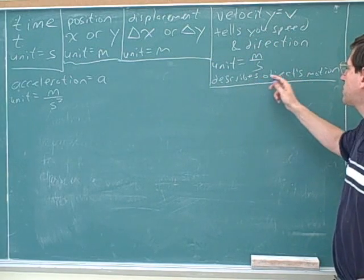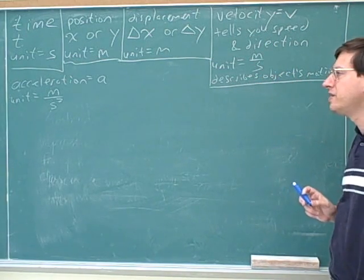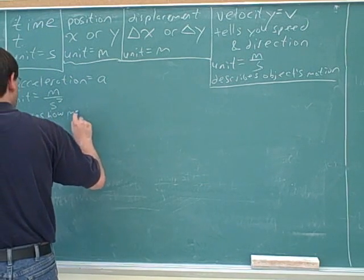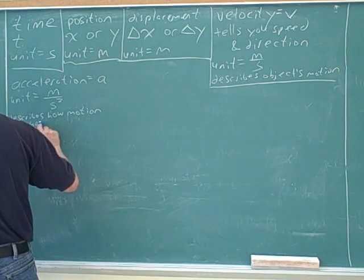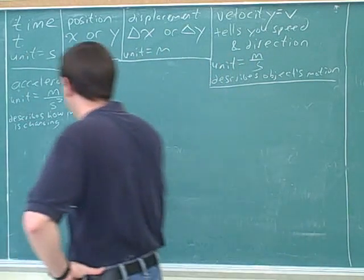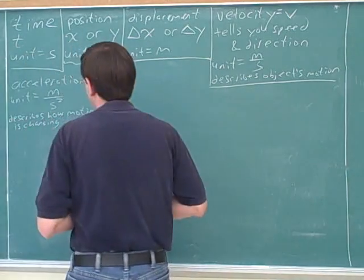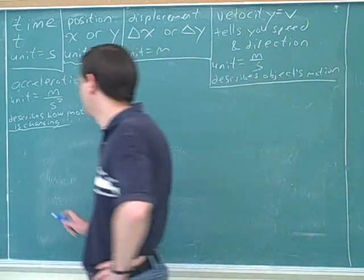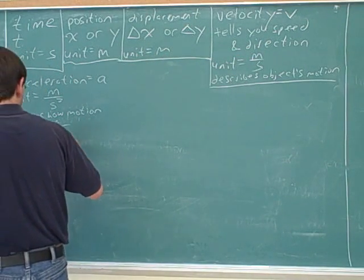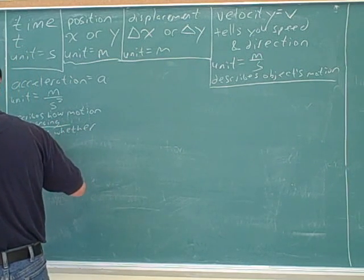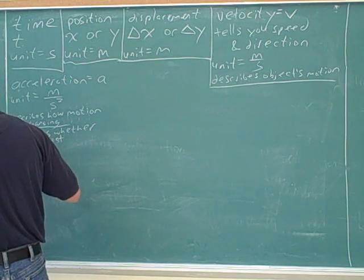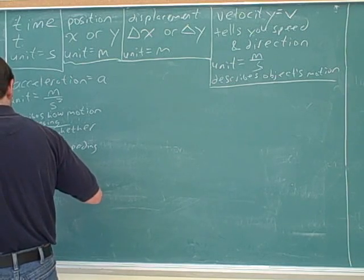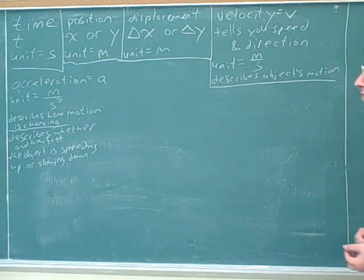If velocity describes the object's motion, what is left for acceleration to tell you? The acceleration describes how the motion is changing. Another way to put it: acceleration tells you how fast you're speeding up or slowing down, and whether the speed is constant.